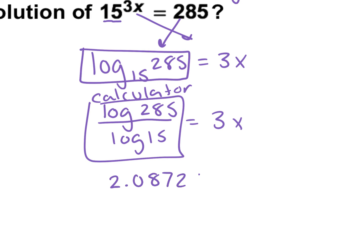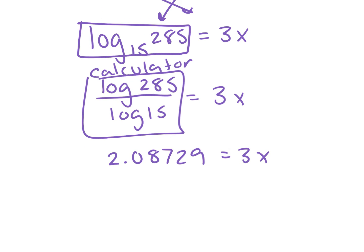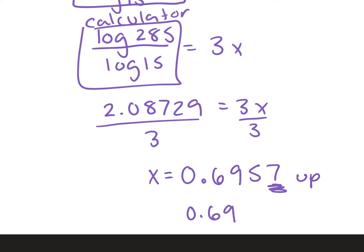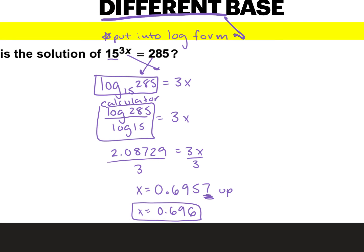We get 2.08729. We're going to keep it in the calculator because we only have one step left. To solve for x, divide by 3. Keep that 2.08729 in the calculator and click divide by 3. x equals approximately 0.6957. If it said round to three decimal places, the 7 means we round up — so x equals 0.696. If your bases are different, you use a calculator: put it into log form and use a calculator.